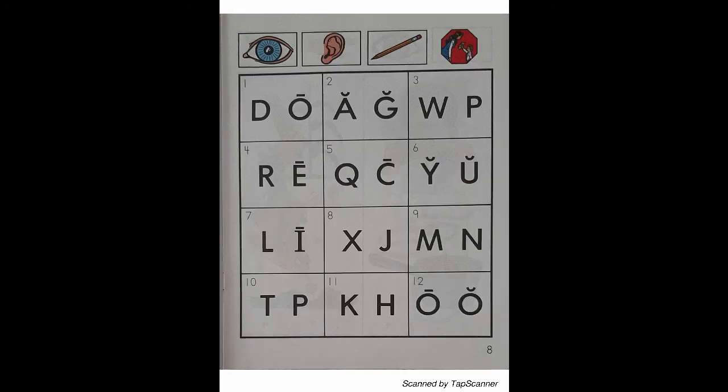Page 8, Letter Sound Recognition. Look at the letters in box 1. Listen as I say the sound of the letter. O — Occupy — O. With your pencil, circle the letter that reads O.